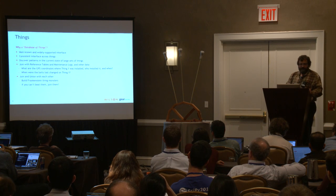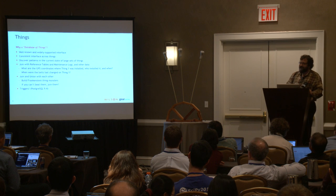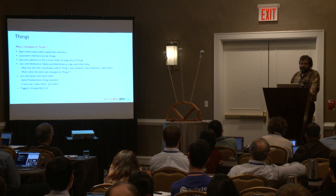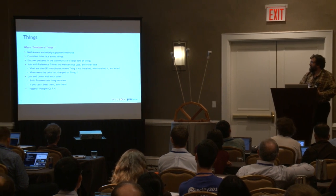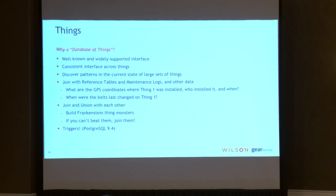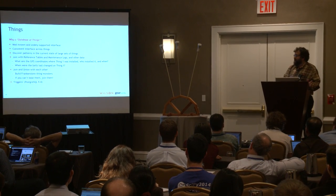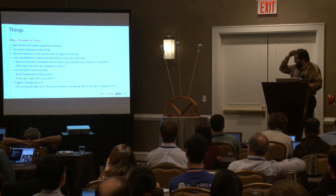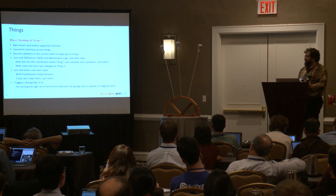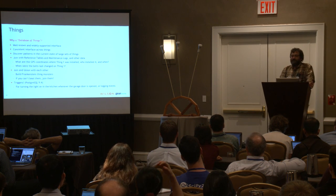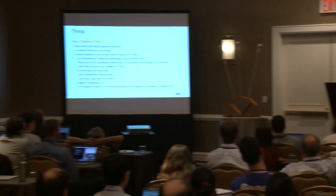Postgres 9.4 supports triggers on foreign tables — interestingly you can't put constraints on them, but you can put triggers. For example, if you tell the database to open your garage door, a trigger on that table could also turn your kitchen light on and log that the garage door was opened. This is all stuff we can do in the database, and I think it's why you would want to build a database of things.